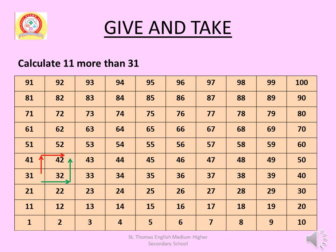Calculate 11 more than 31. More means addition — you have to add 11 to 31. 11 means 1 row up and then 1 step right. This can be done in 2 ways. First way: start from 31, jump up 1 row to 41, then 1 step right to 42, shown with red arrows in the table.